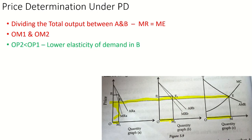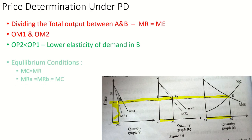The prices in the two markets are OP1 and OP2, where OP1 is higher than OP2. This is because market A has lower elasticity of demand, allowing a higher price to be charged there.